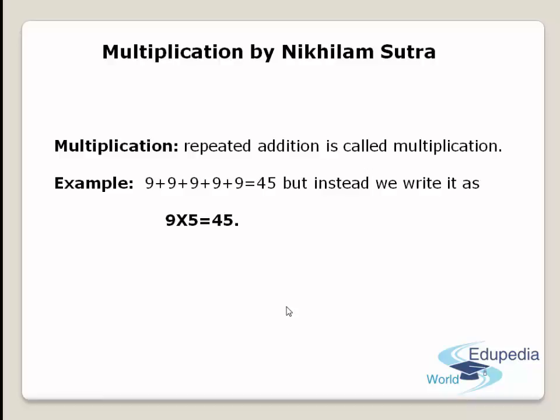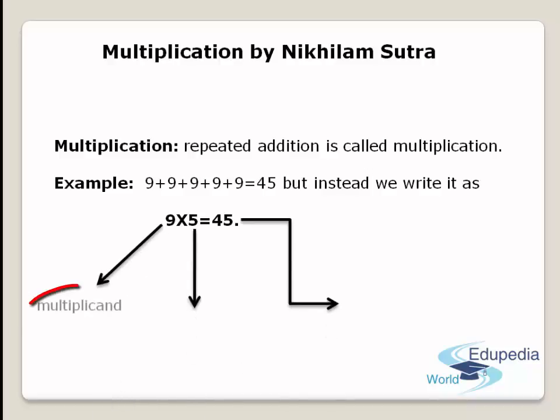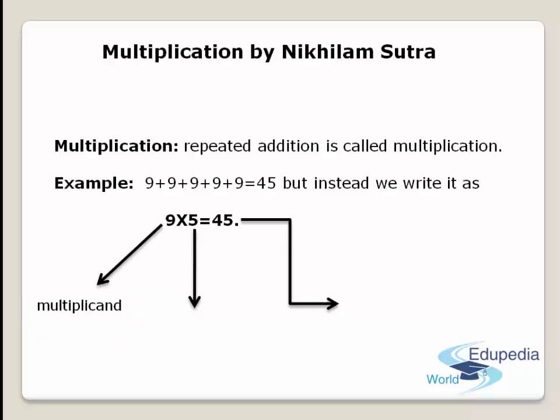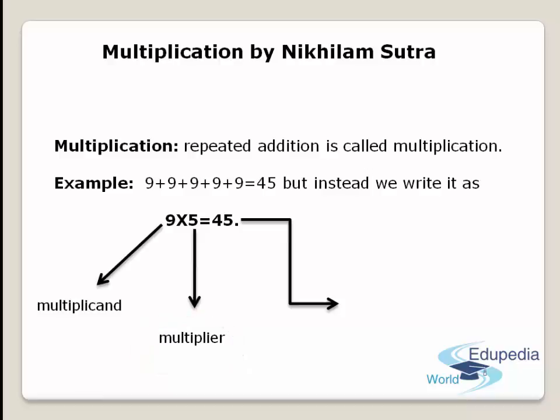Now let us see what 9, 5, and 45 are called. This 9 is called the Multiplicand — the number that is being multiplied. The number 5 is called the Multiplier — the number that is multiplying the Multiplicand. And 45, the answer, is called the Product. Whenever you multiply any two numbers, the answer obtained is called the Product.